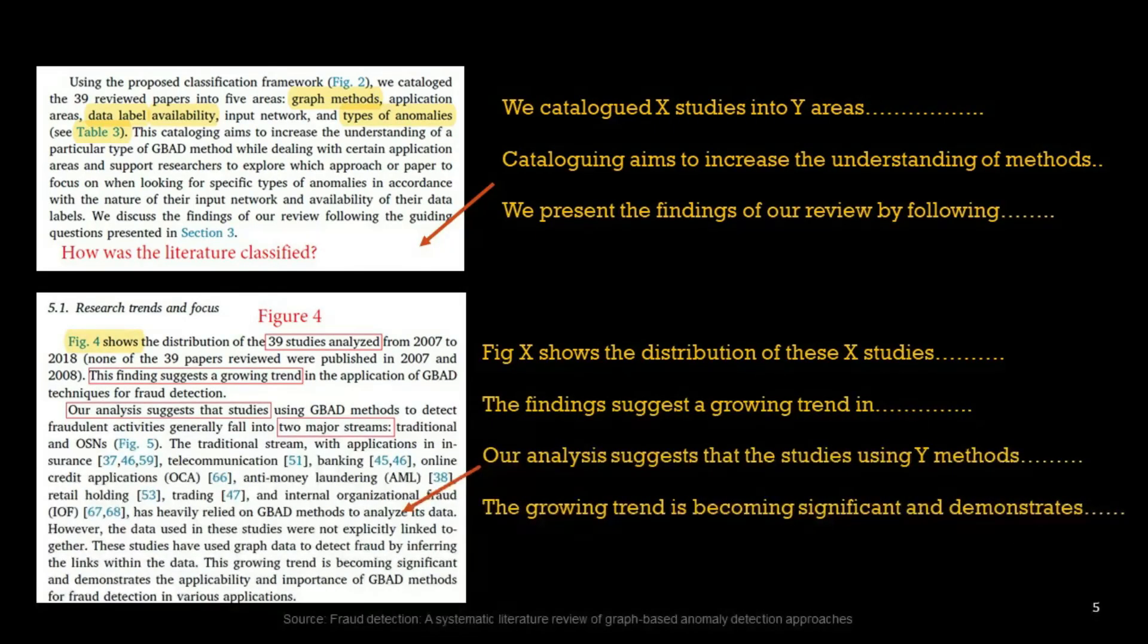Let's see what they have written here. Using the proposed classification framework, we cataloged 39 review papers in five areas. So they have mentioned these areas and there is a reference to a table.